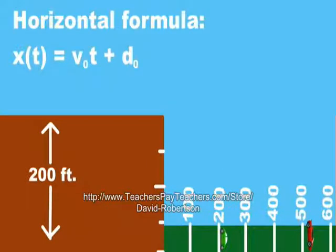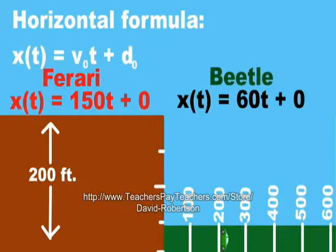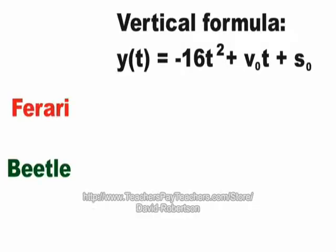Here's the horizontal formula. While v sub-zero represents the velocity in the beginning, d sub-zero represents the initial head start horizontally that this car gets. There's the Ferrari and the Beetle equations, where 150 and 60 are the initial velocities, and zero was the initial head start.